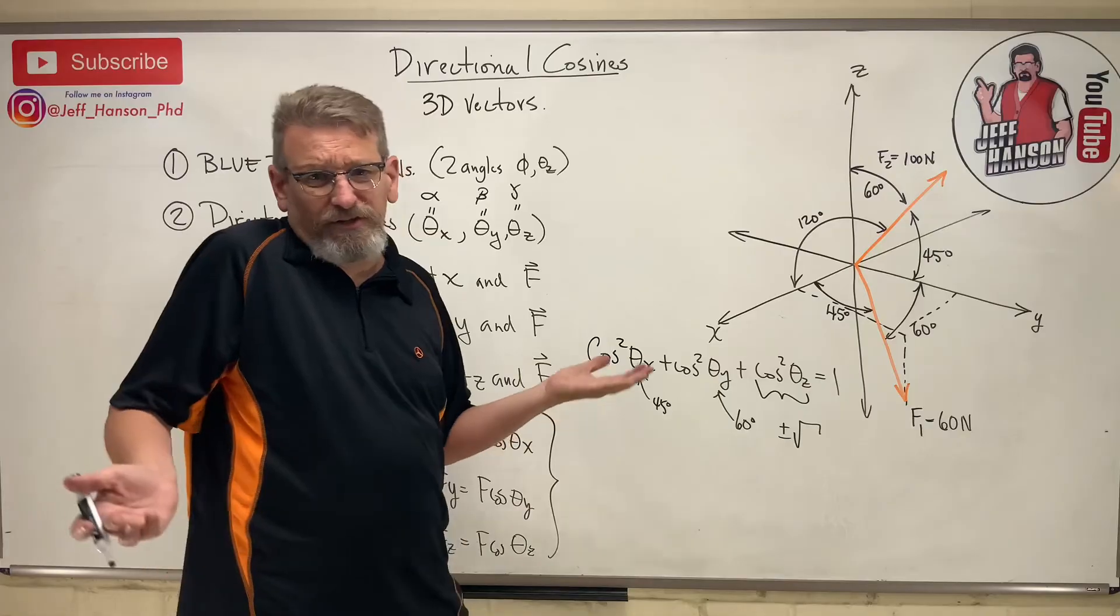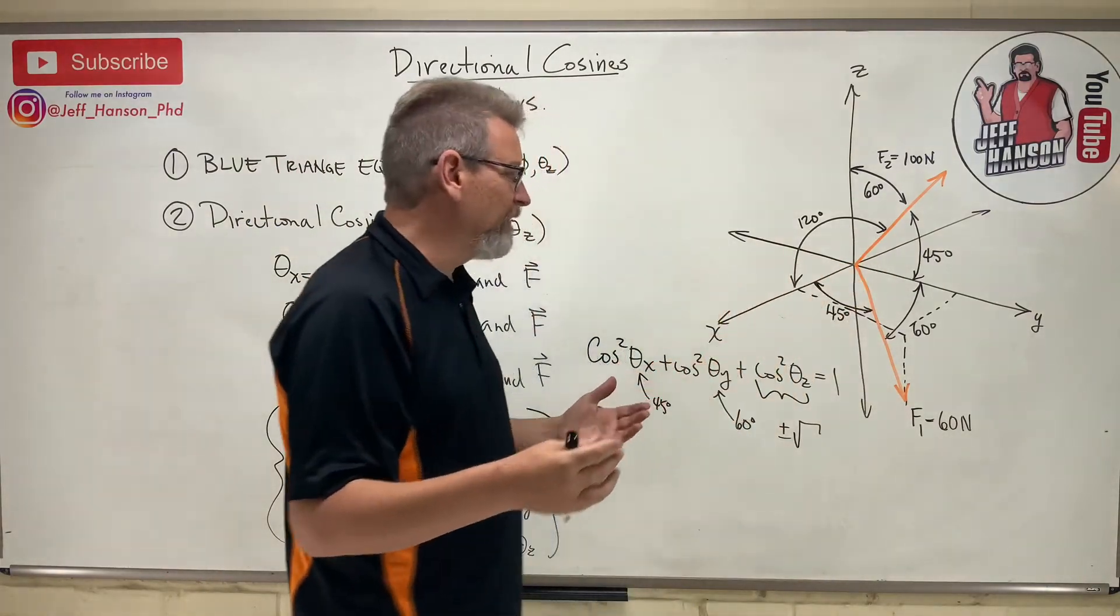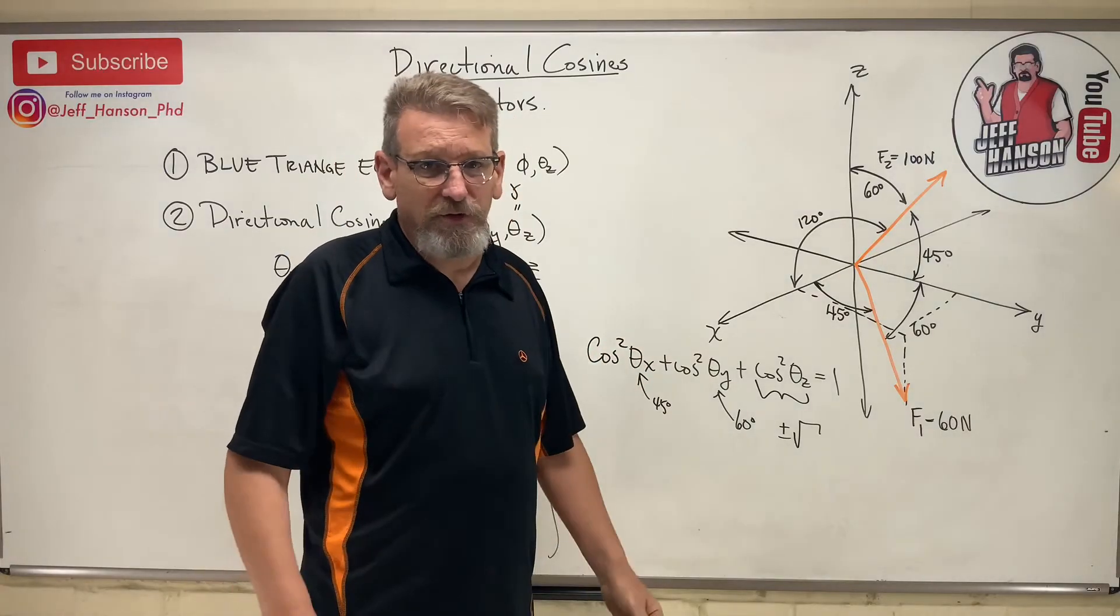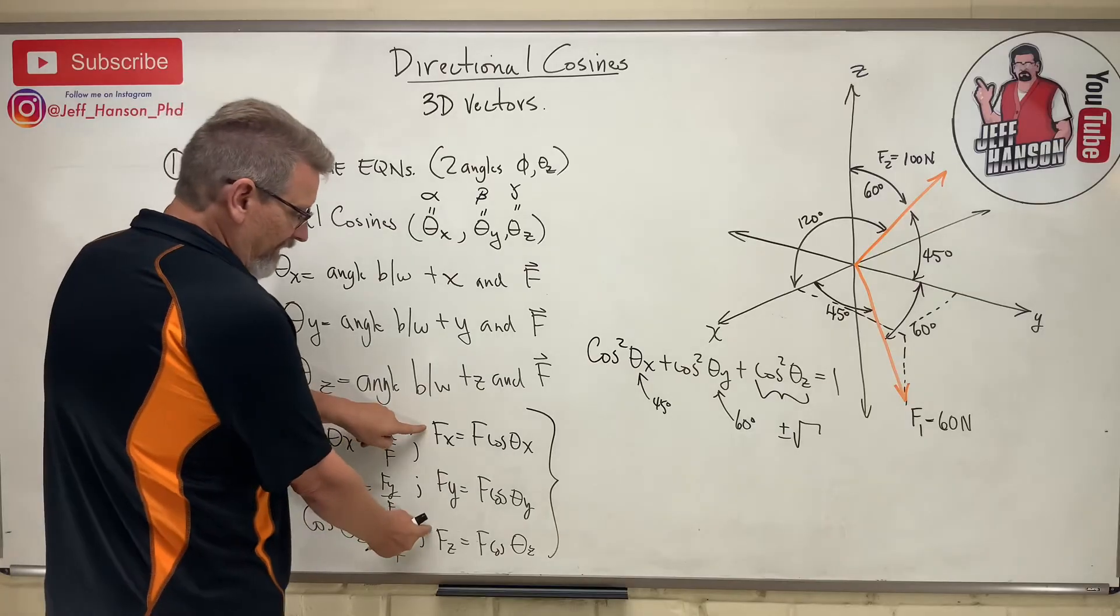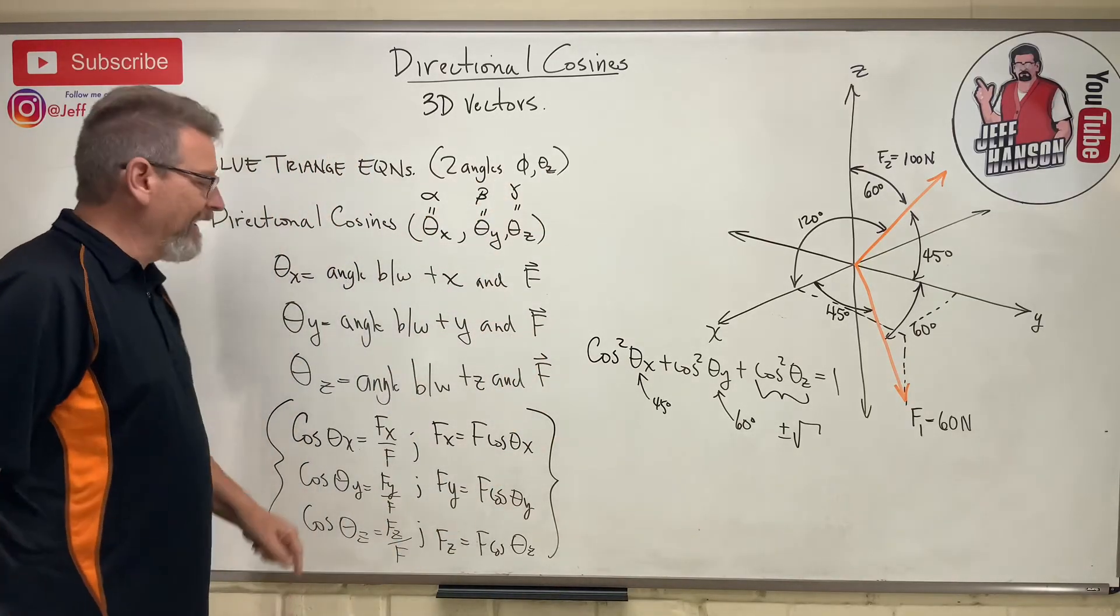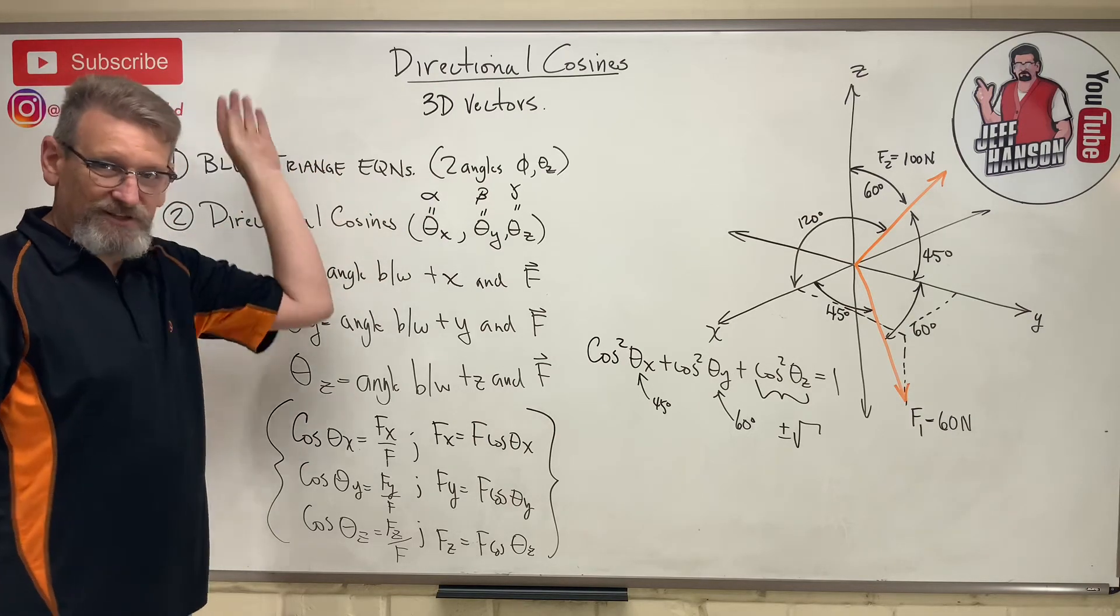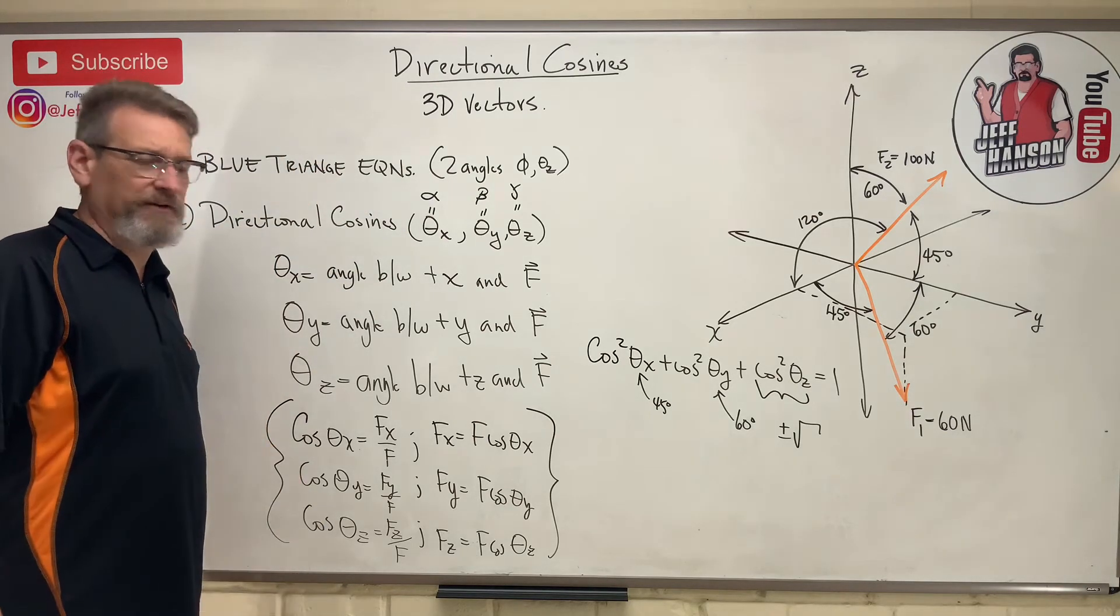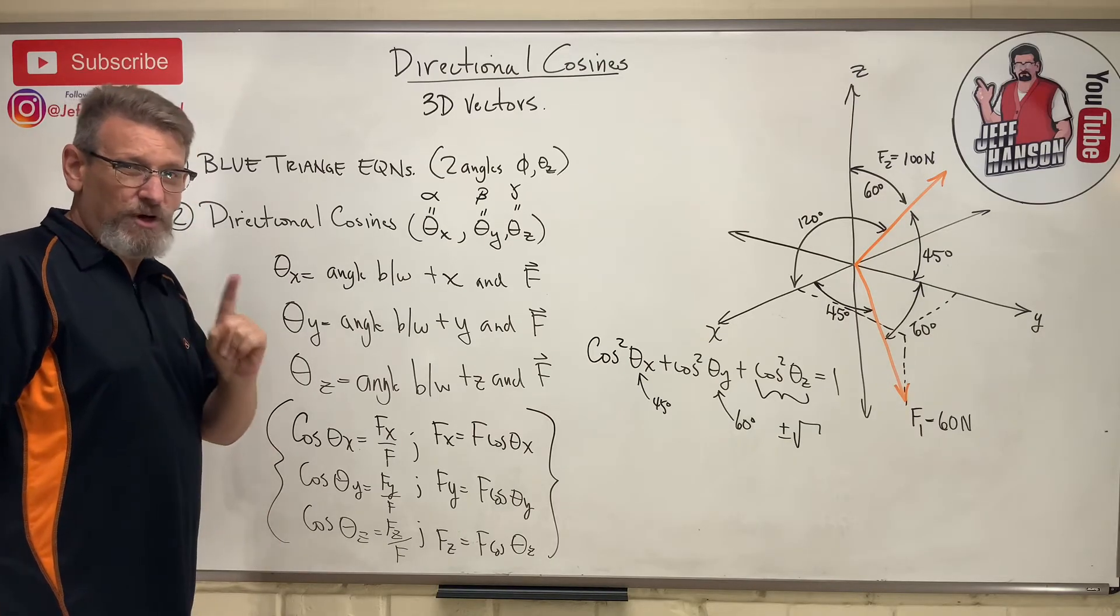The key is recognizing when you see these vectors given this way, what am I looking at? Is this a blue triangle or is this a directional cosine? The easiest way is just look at the dimension lines. If the dimension line goes from the axis to the vector every time, then it's a directional cosine. I can take a directional cosine vector and add it to a blue triangle vector easy as pi. Add the x's to the x's, the y's to the y's, the j's to the j's, resultant, done.